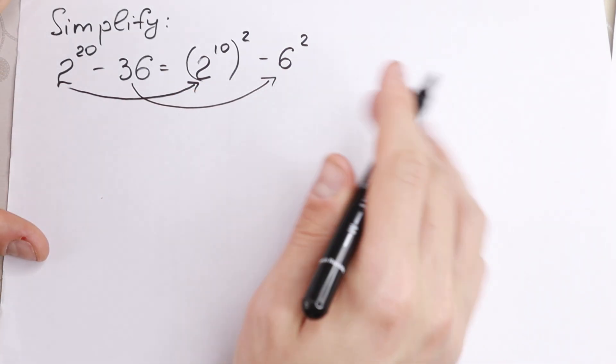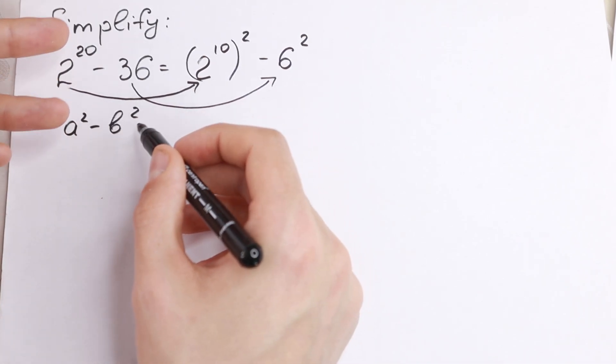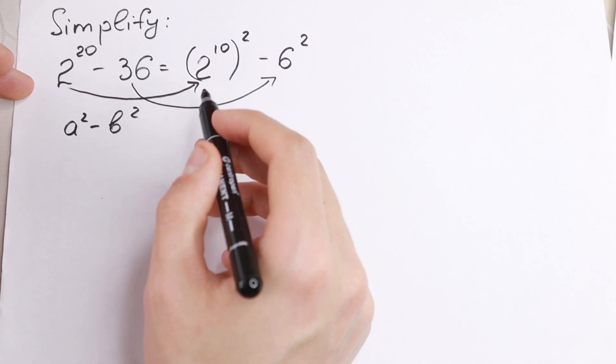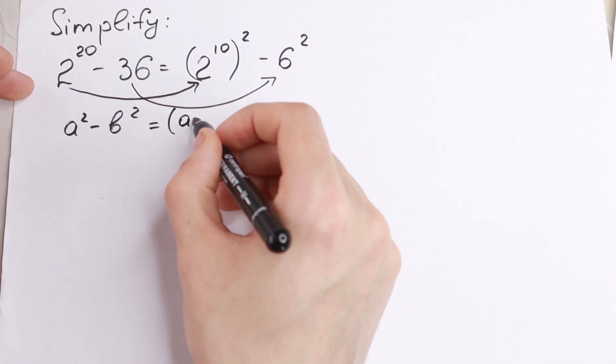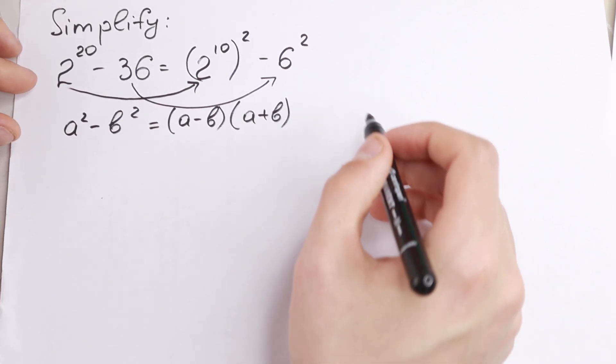We have difference of squares and we need to know a formula. If we have a square minus b square, so two numbers, difference of two numbers with the 2nd power, we can write it as a minus b times a plus b. So split it into an identity.